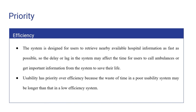Efficiency is placed second in the prioritization of design quality, as the use of the system is associated with human life. The system is designed for users to retrieve nearby available hospital information as fast as possible, so delay in the system may affect the time for the user to call an ambulance or get important information to save their life. Usability has priority over efficiency because the waste of time in a poor usability system may be longer than in a low efficiency system.